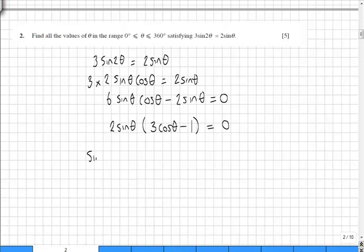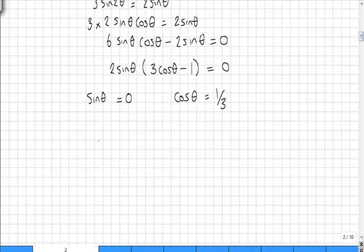So in the first instance, sine theta could equal 0 and cos theta could equal a third. Well, for sine theta equals 0, this is an easy one. It's 0 degrees, 180 degrees, and 360 degrees.